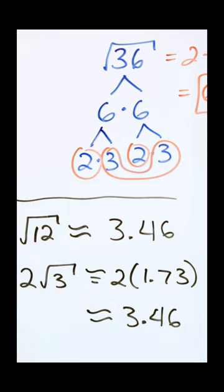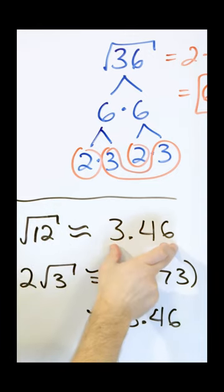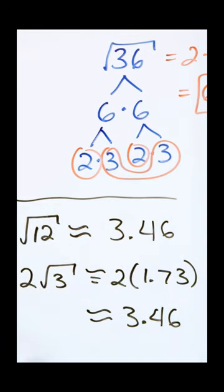So what I'm trying to show you is that if you calculate the square root of 12, you get 3.46. And if you calculate two times the square root of three, which is what we're saying the answer is, you also get 3.46.